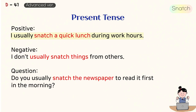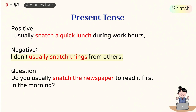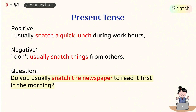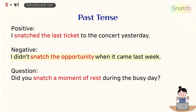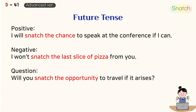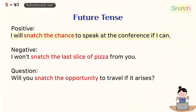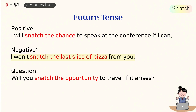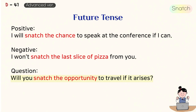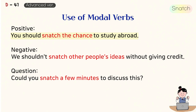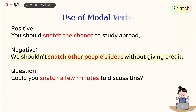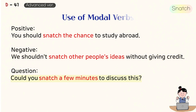Present tense: I usually snatch a quick lunch during work hours. I don't usually snatch things from others. Do you usually snatch the newspaper to read it first in the morning? Past tense: I snatched the last ticket to the concert yesterday. I didn't snatch the opportunity when it came last week. Did you snatch a moment of rest during the busy day? Future tense: I will snatch the chance to speak at the conference if I can. I won't snatch the last slice of pizza from you. Will you snatch the opportunity to travel if it arises? Use of modal verbs: You should snatch the chance to study abroad. We shouldn't snatch other people's ideas without giving credit. Could you snatch a few minutes to discuss this?